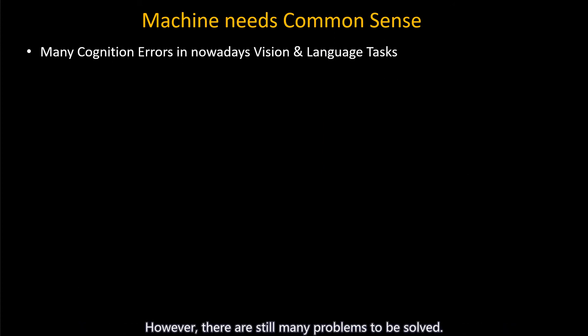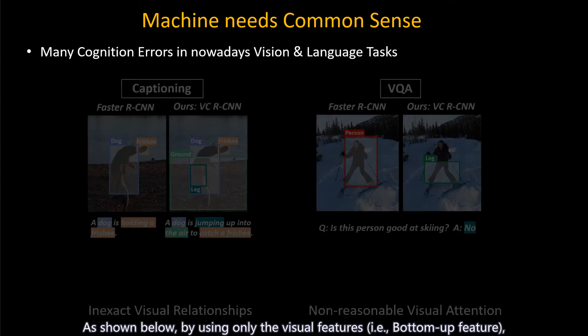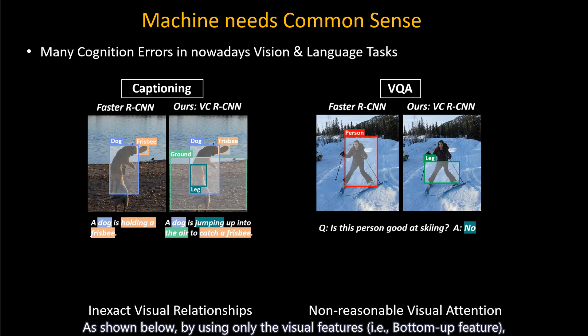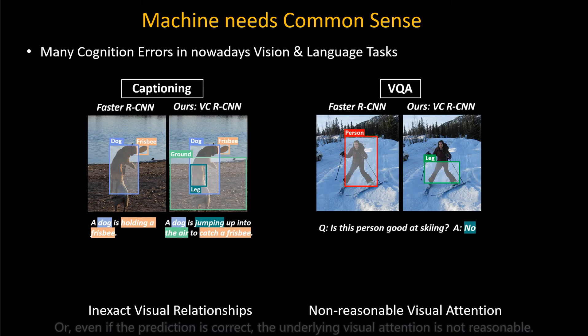However, there are still many problems to be solved. Here, we show some cognition errors in nowadays vision and language tasks. As shown below, by using only the visual features, i.e., bottom-up feature, machine usually fails to describe the exact visual relationships, or even if the prediction is correct, the underlying visual attention is not reasonable.